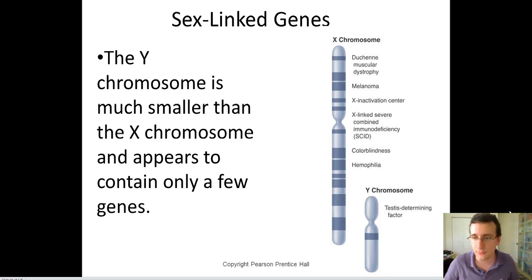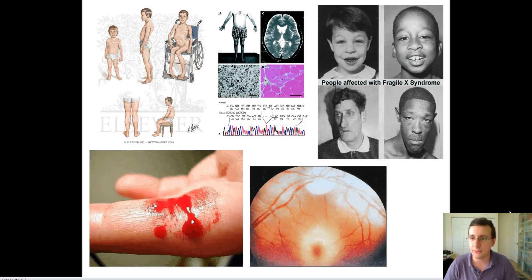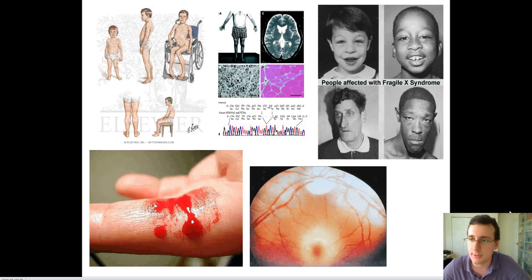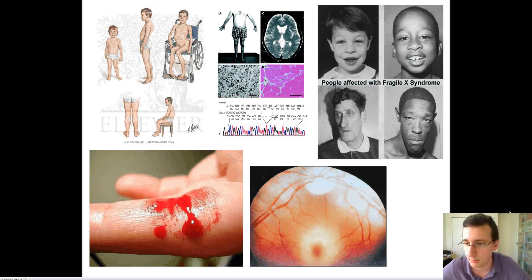Some of them are, for example, Duchenne muscular dystrophy, where the presence of a defect on the X chromosome causes problems in muscular development, which eventually causes deterioration of all the muscles of the body, leading to motor problems and even respiratory problems because your diaphragm will have trouble moving around.